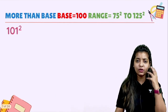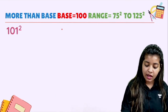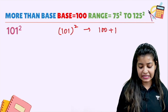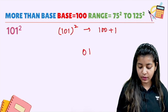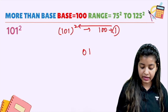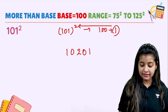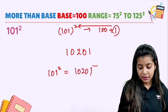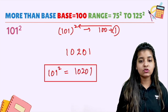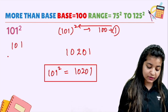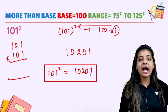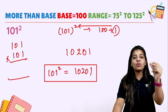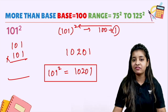Let's do one more example. 101 squared — how can we write it? 100 plus 1. Write 1 squared as 01. Take 1 and add it to 101: 101 plus 1 gives 102. So 101 squared is 10201. Did you ever think of solving it this quickly? With the help of this trick, we solved this question within seconds, everybody.